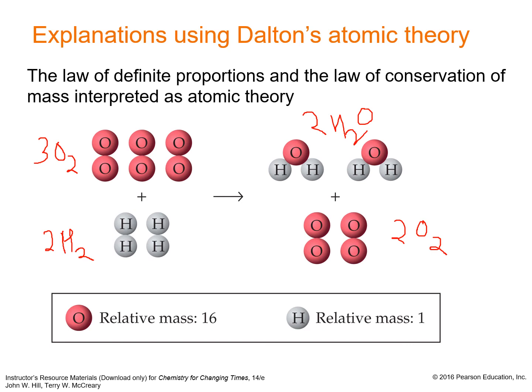The mass on the left-hand side and the right-hand side is conserved even though the compounds look different. The law of definite proportions is also illustrated: water is formed in the ratio of 2:1, meaning two hydrogen atoms combine with one oxygen atom to form water. Two water molecules are formed and the rest of the oxygen is released. We can think of chemical reactions as the rearrangement of atoms through breaking and forming molecules — that's how Dalton's theory explains these two laws.